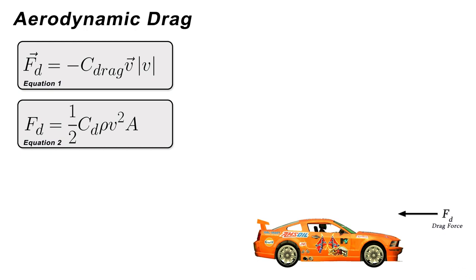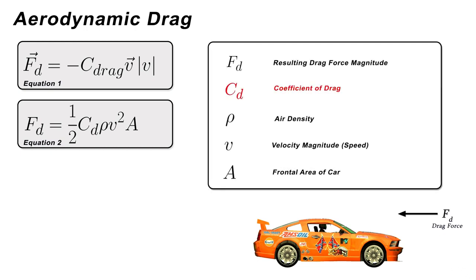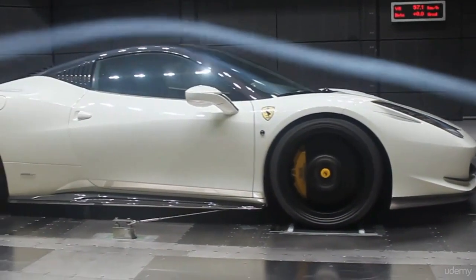The Cd term in equation 2 is referred to as the coefficient of drag and is different for every single car. It depends on the shape of the car body and is determined at design time via tests in wind tunnels.